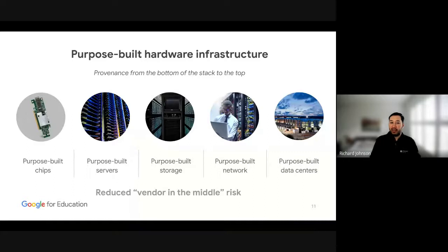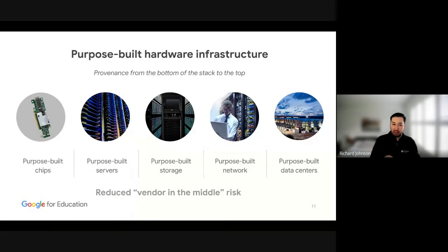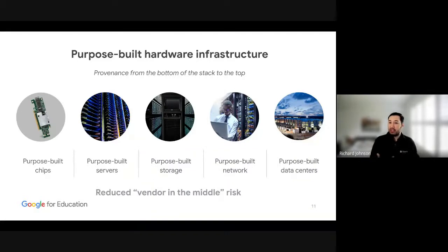We build everything from the top down — the data centers all the way down to the chips. The network, storage, even the racks inside the data center are built by us. The hard drives are built by us; we destroy drives when they become useless and turn them into confetti. The server racks are all built by us, and even down to the Titan chips that go into things like Chromebooks.